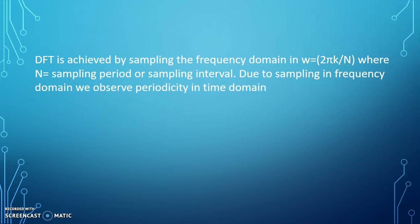DFT is achieved by sampling the frequency domain in ω = (2πk/N) where N is the sampling period or sampling interval. Due to sampling in the frequency domain, we observe periodicity in the time domain. This is the formula because of which we get a perfect and simplified matrix version.